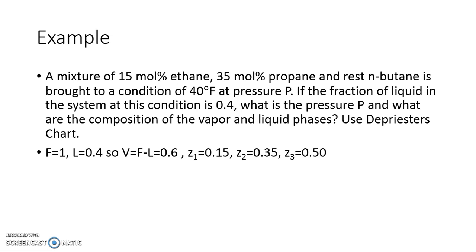Z1, Z2, Z3 are known to us and we know the equation. The equation is Zi into Ki minus 1 over 1 plus V by F Ki minus 1, and the summation of this should be 0.